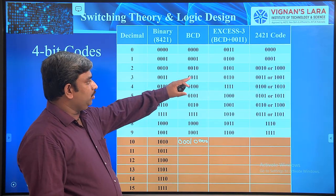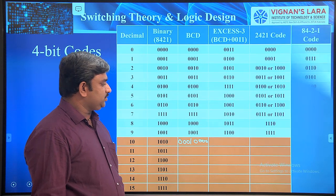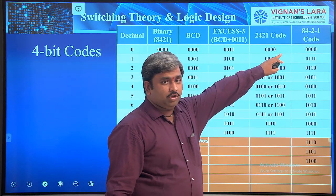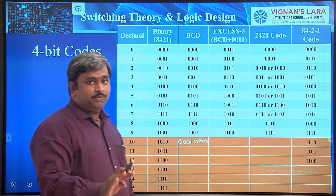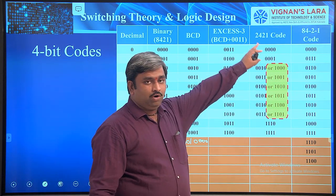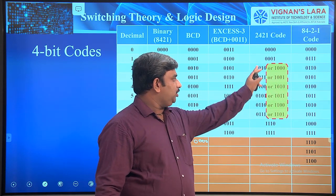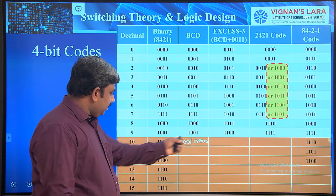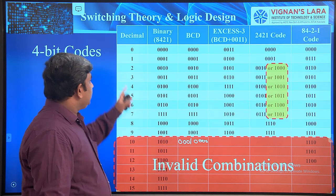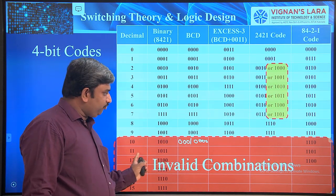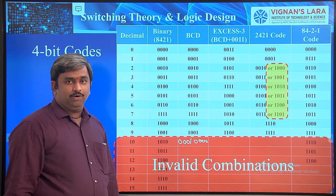The 2421 code allows two representations for some values from the human perception standpoint, but the machine only accepts one. For the 8, 4, -2, -1 code, values from 0 to 12 can be formed, but only 0 to 9 are used. Any remaining combinations in these 4-bit codes are invalid combinations.